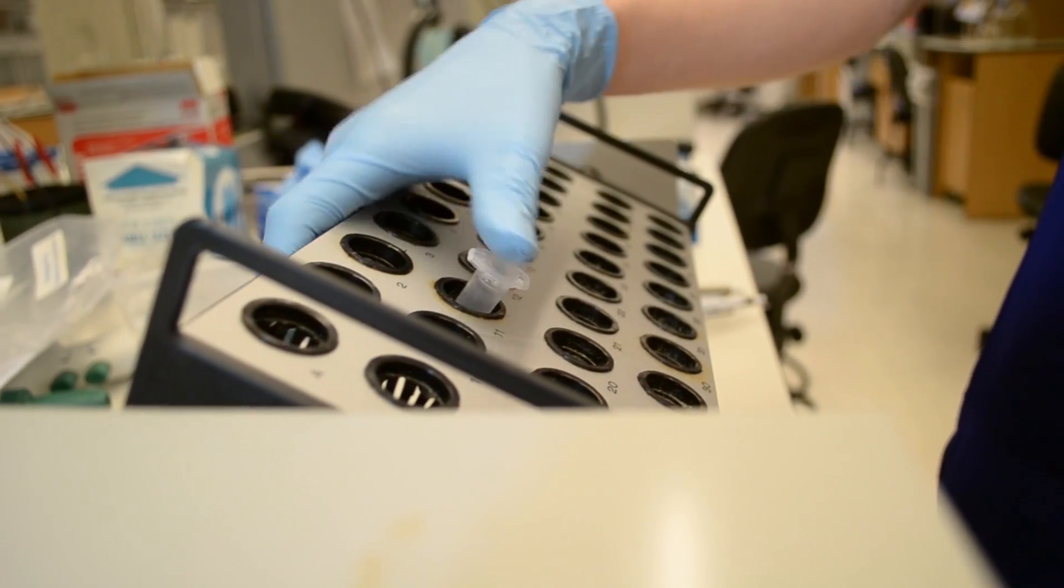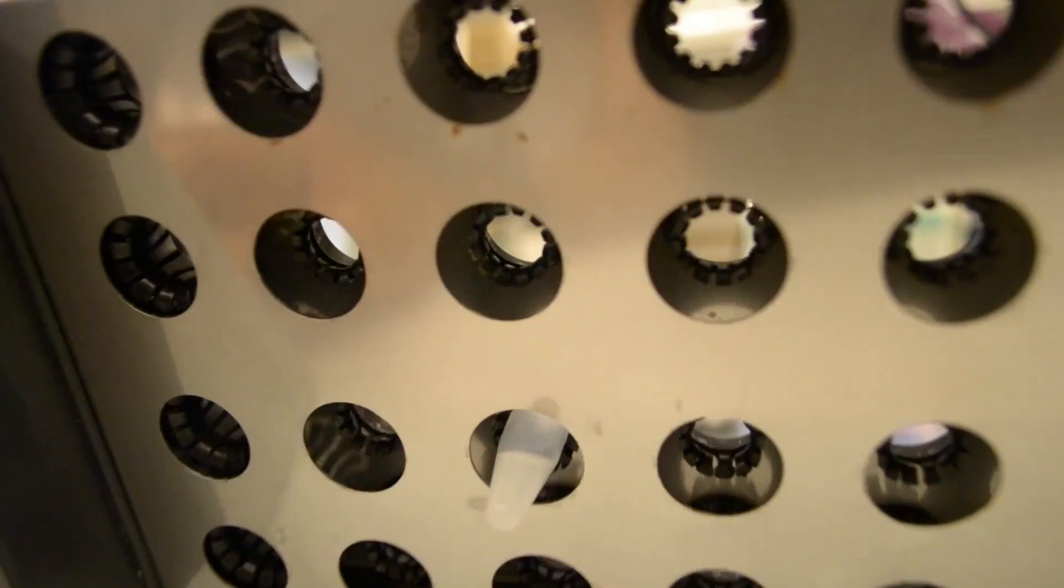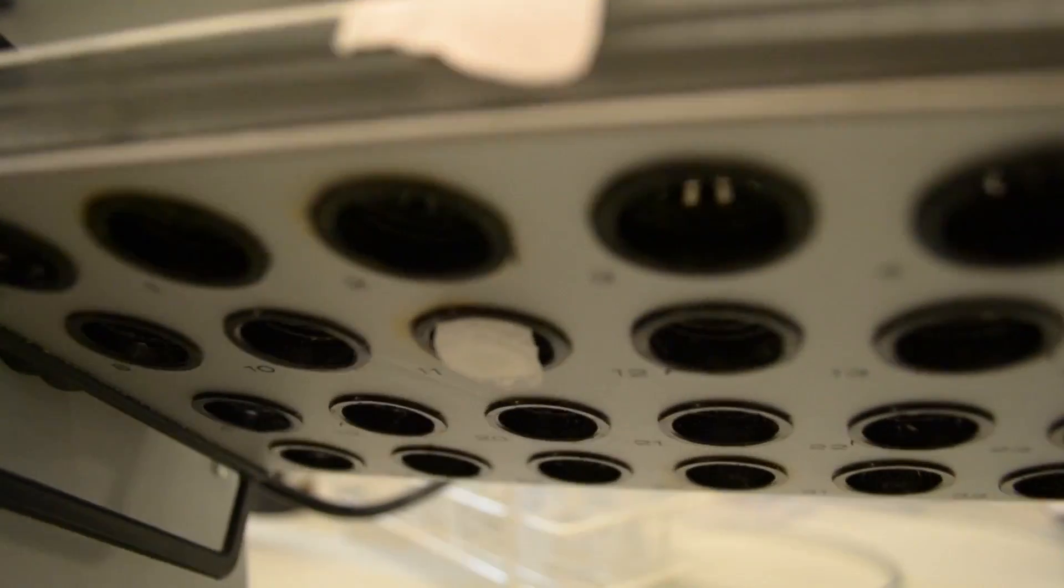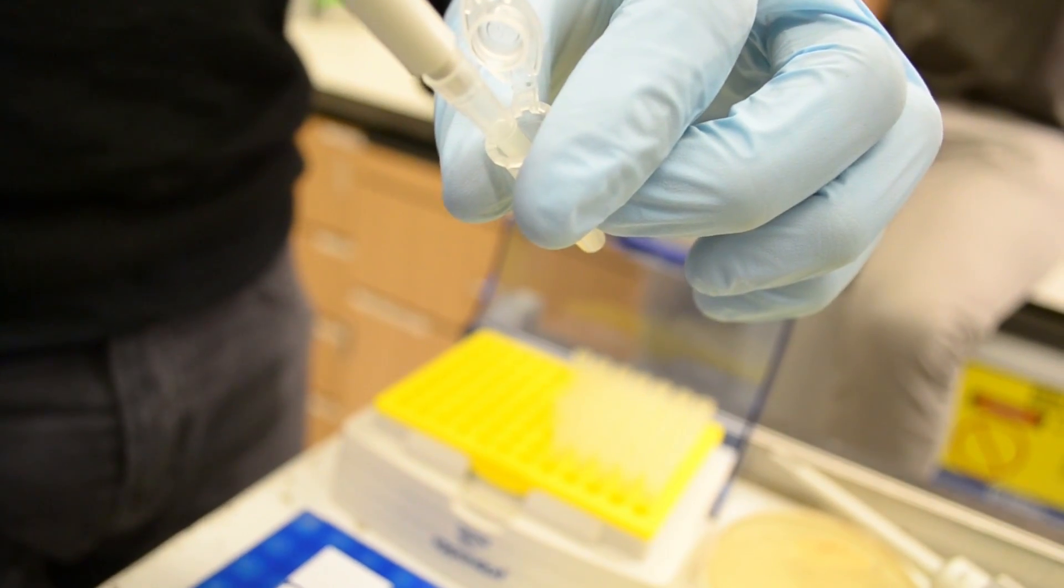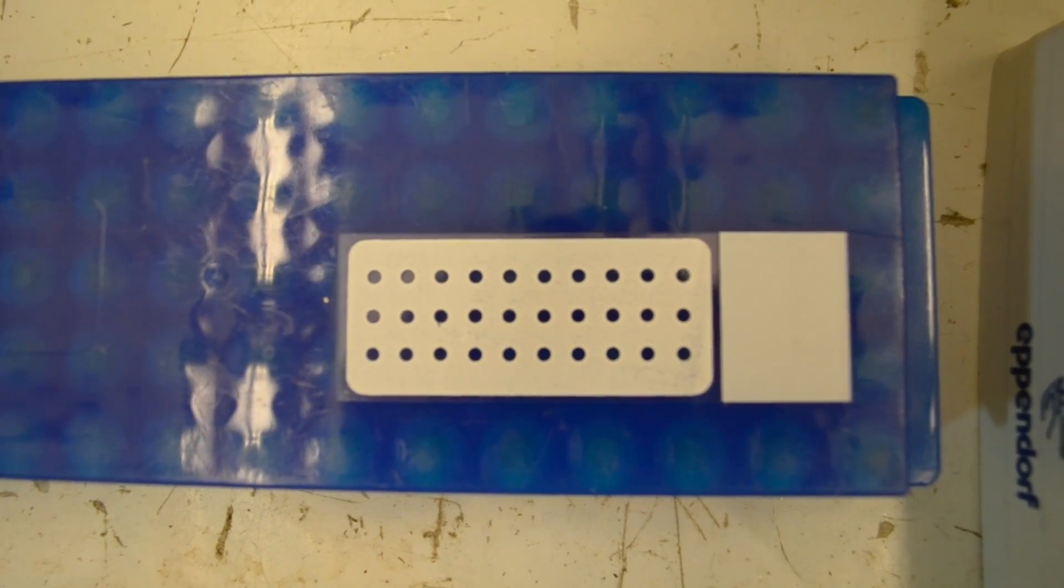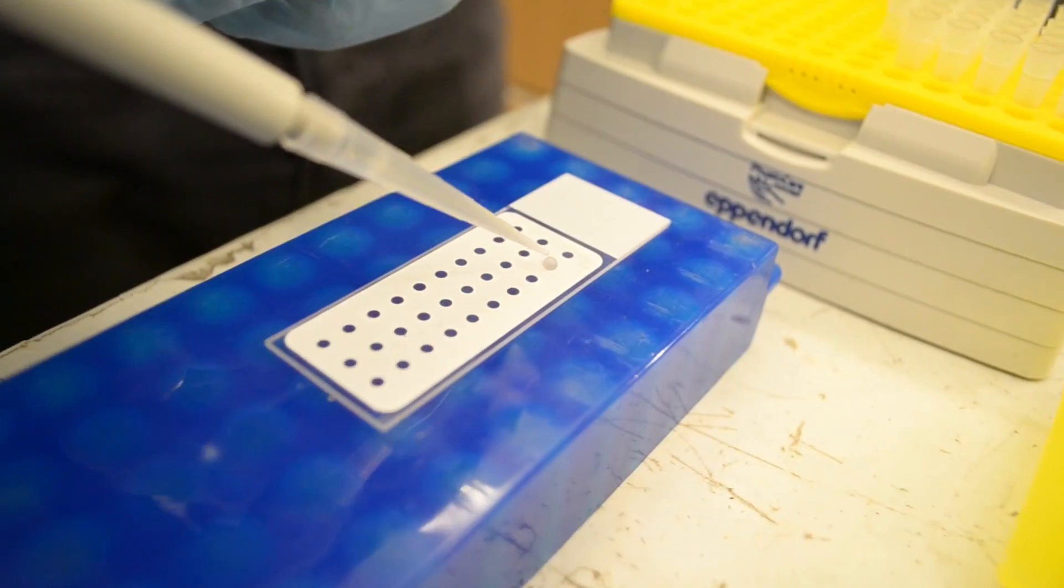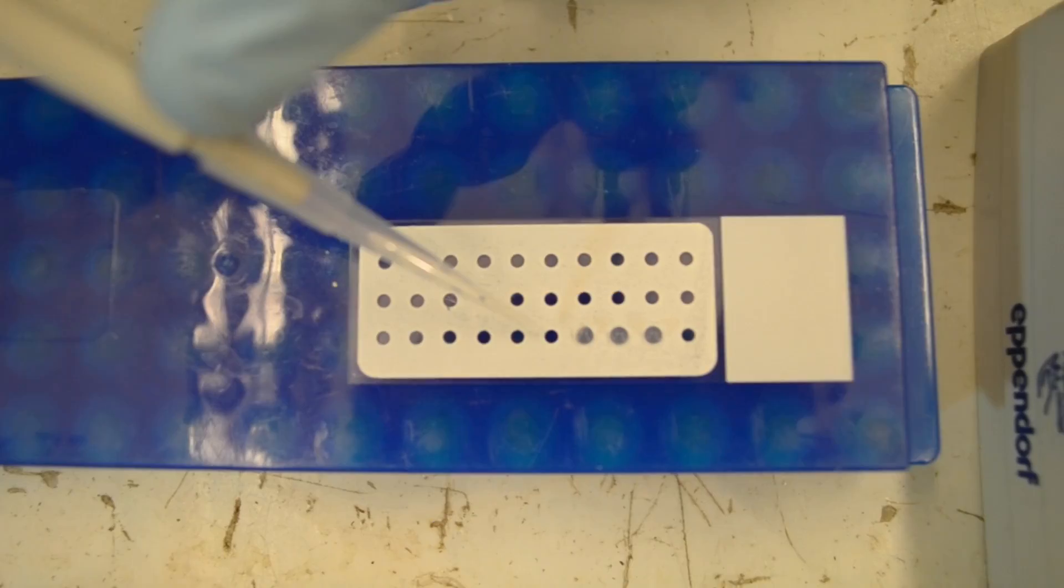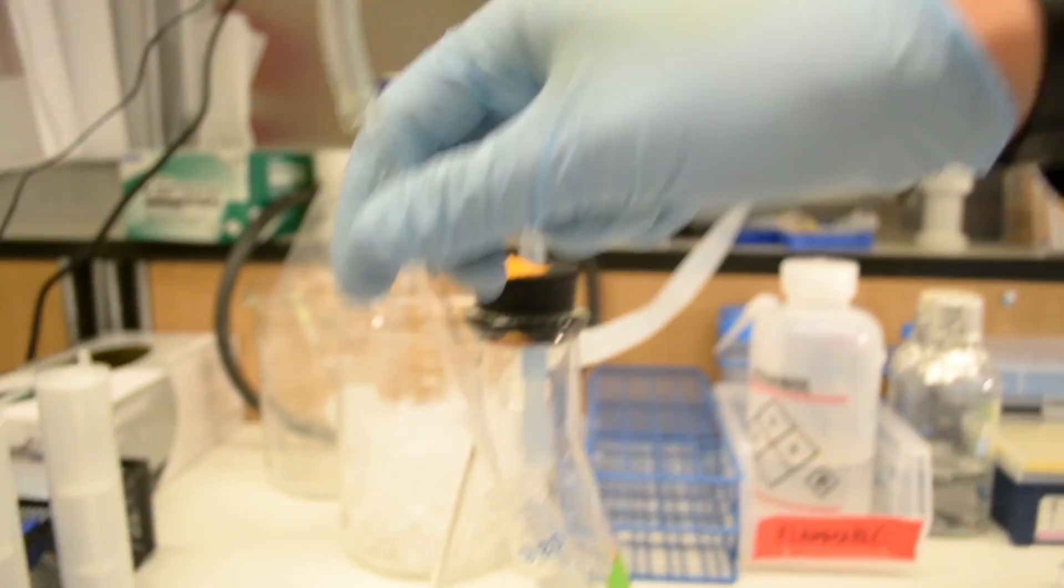Now we're going to take these cells and put them onto our microscope slide. This slide has lots of little wells in it. This means the cells will sink to the bottom, stick to the glass, and in the next steps they won't wash away.